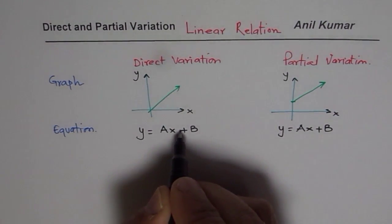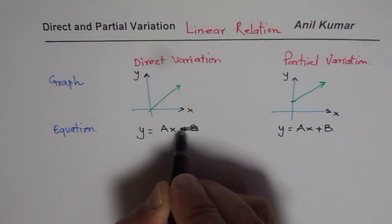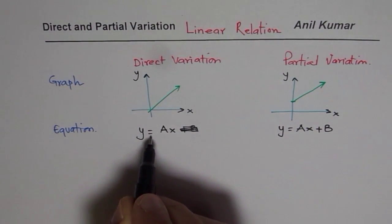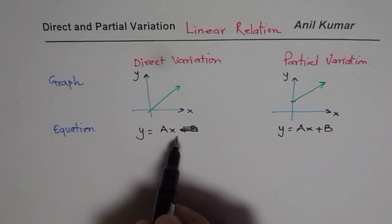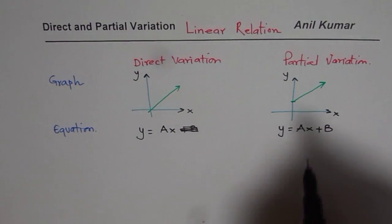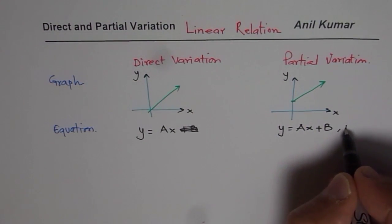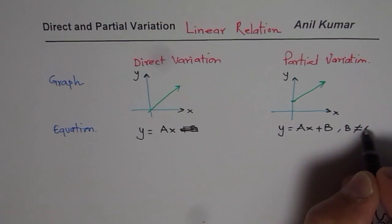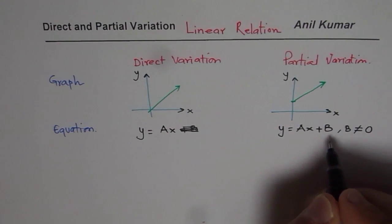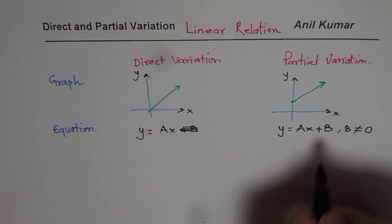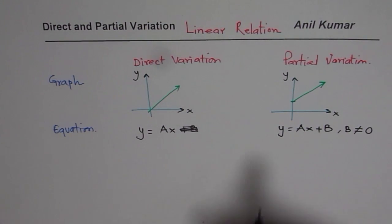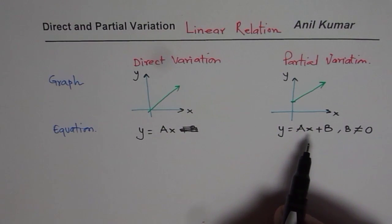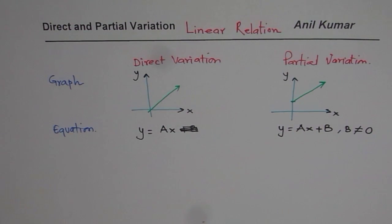But if the equation is with b equals to zero, that means if the equation is only y equals to ax, then it becomes a direct variation. But if it is ax plus b, where b is not equal to zero, but something else, in that case it becomes a partial variation. So that is another way of checking whether a variation is there or not.